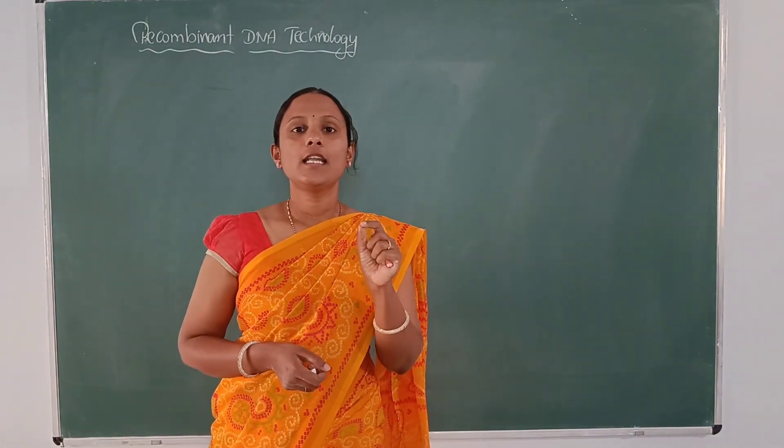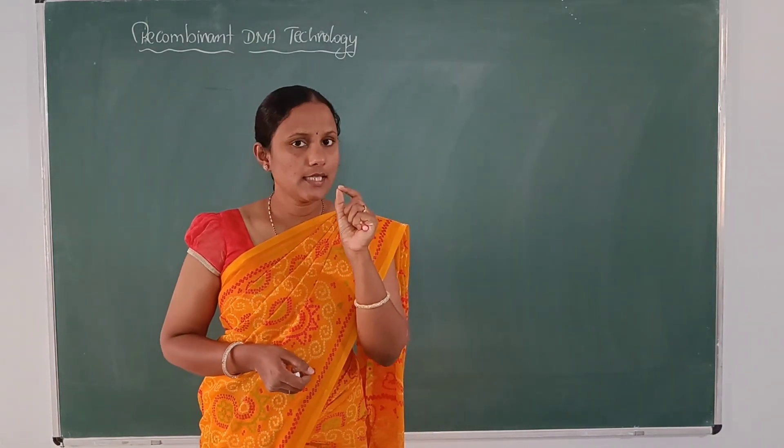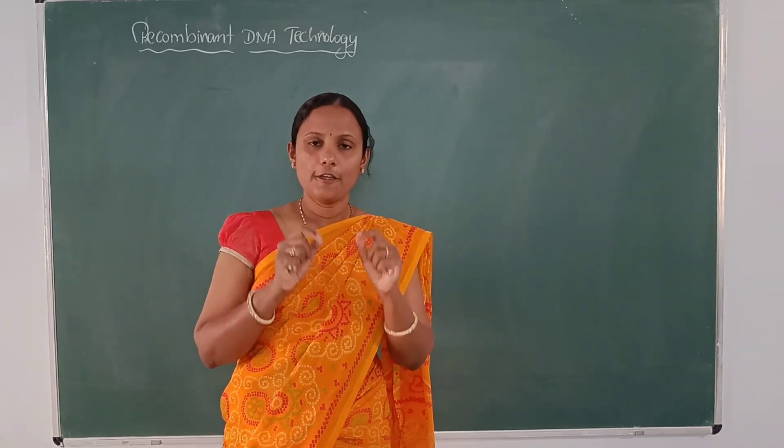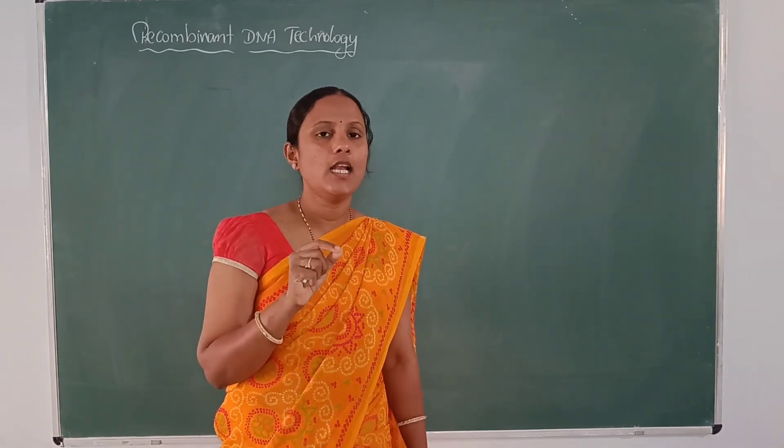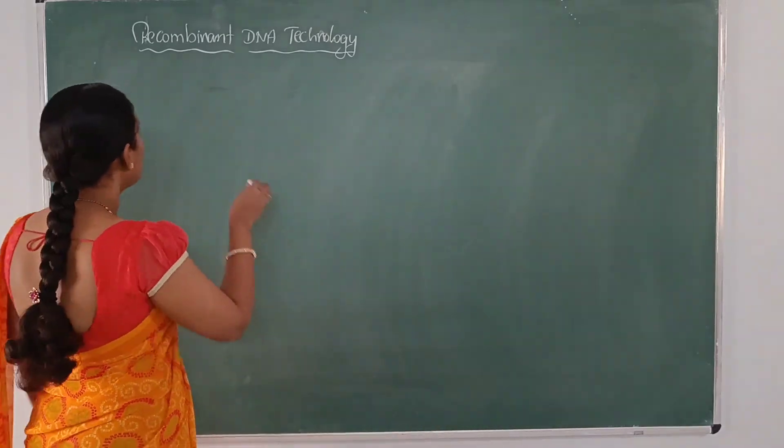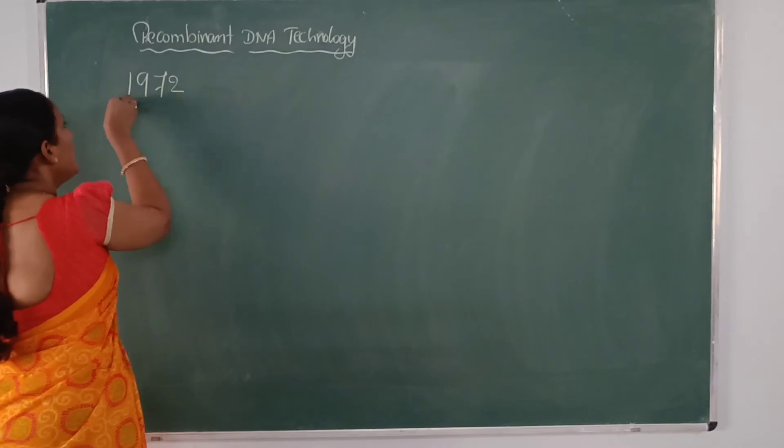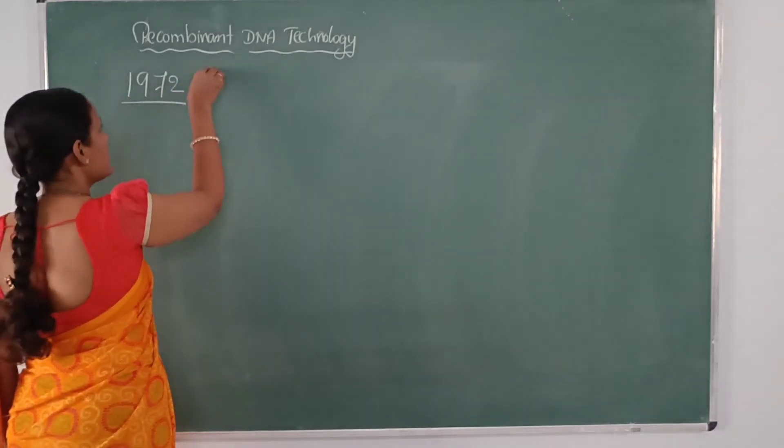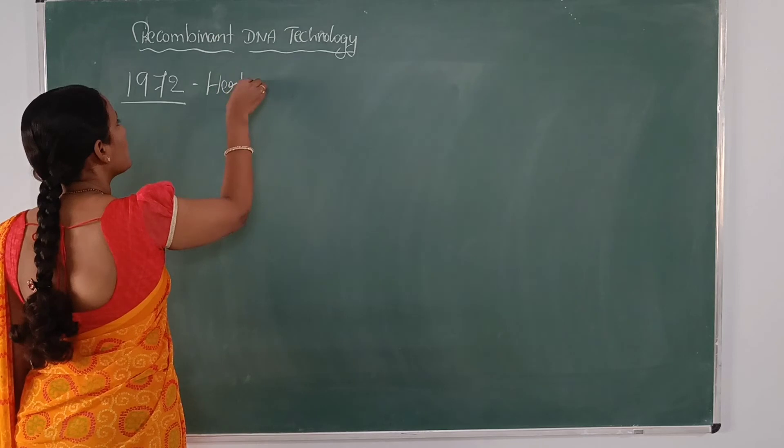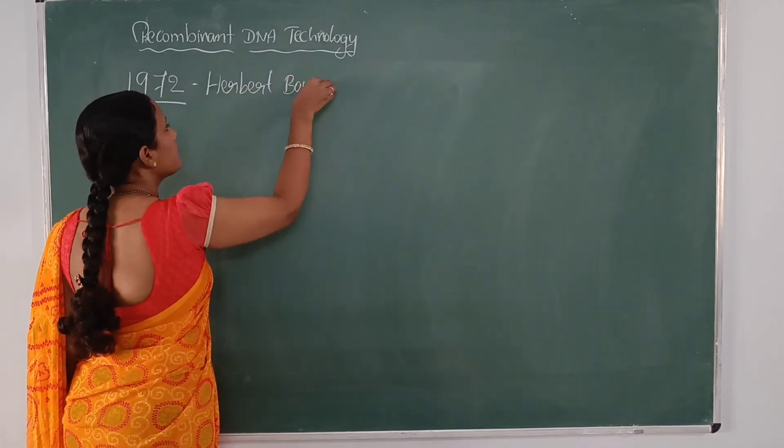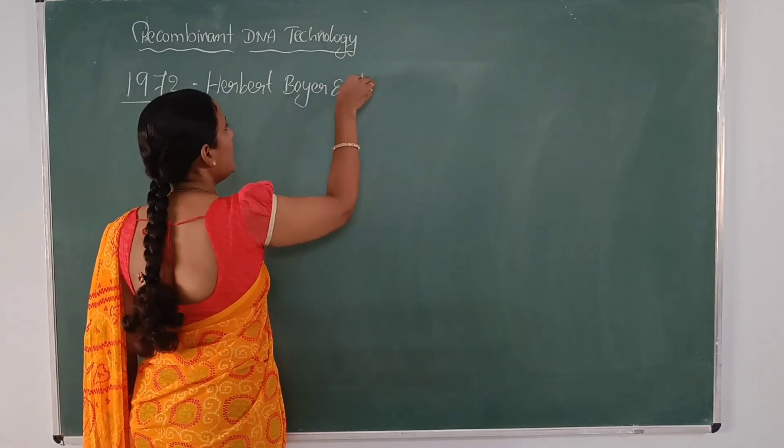The first recombinant cell that is artificially developed was created in 1972 by two scientists, Herbert Boyer and Stanley Cohen.